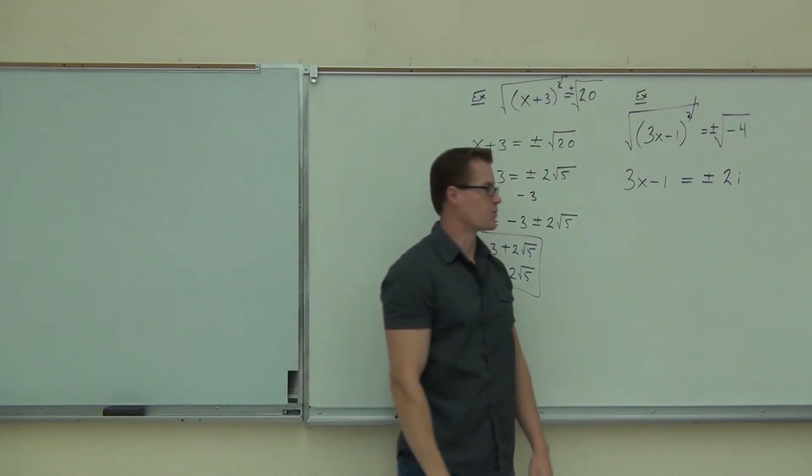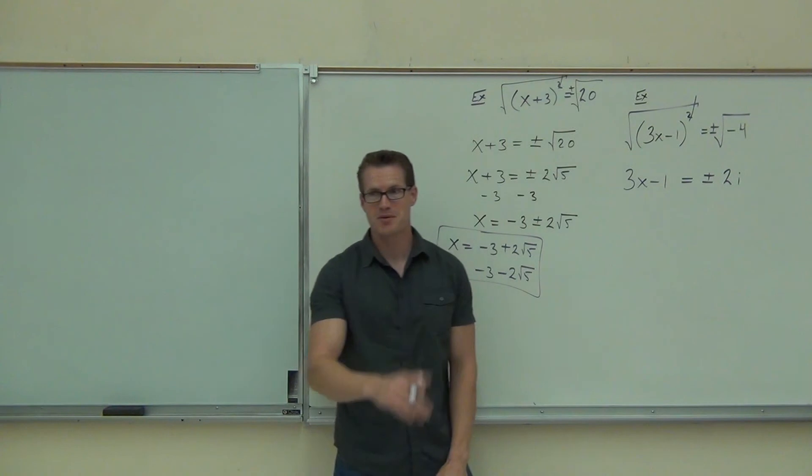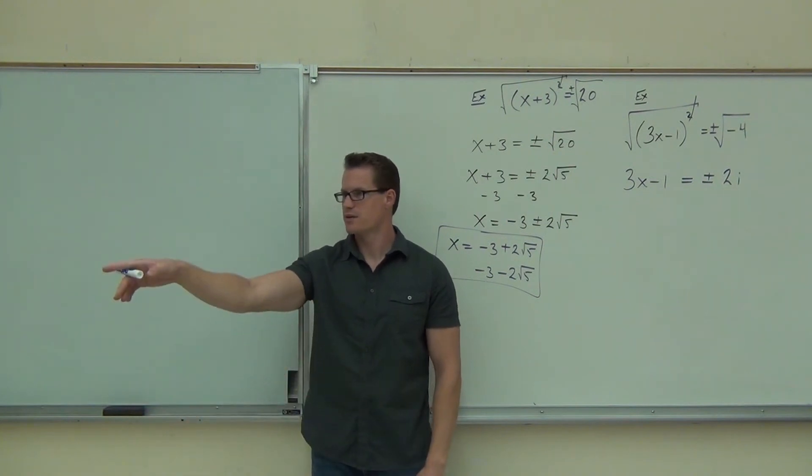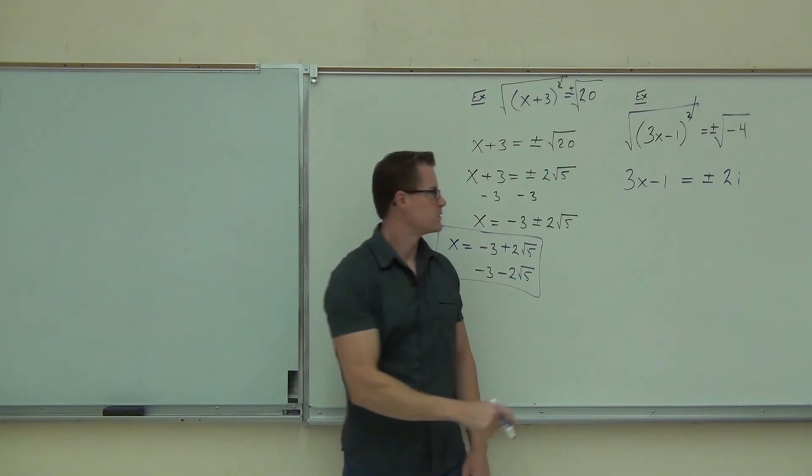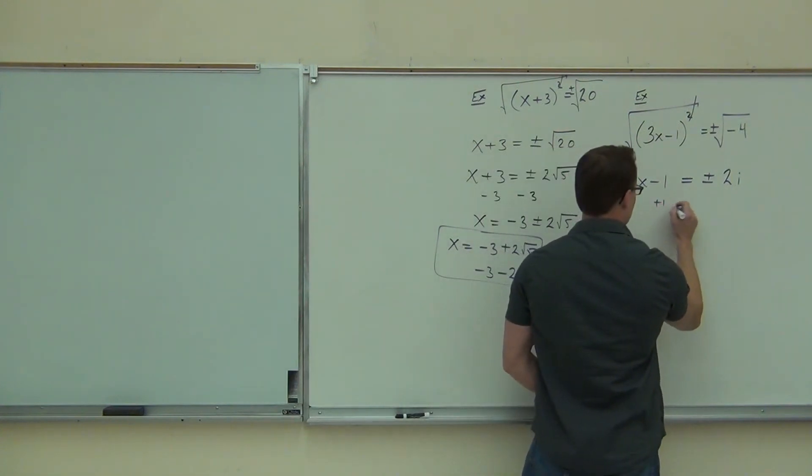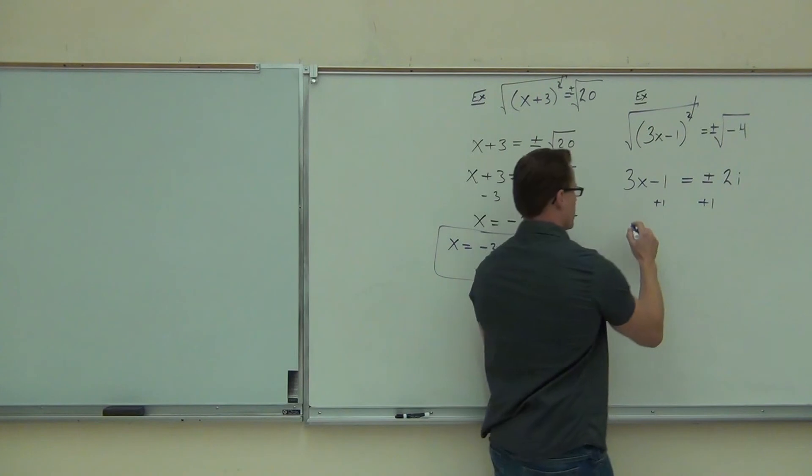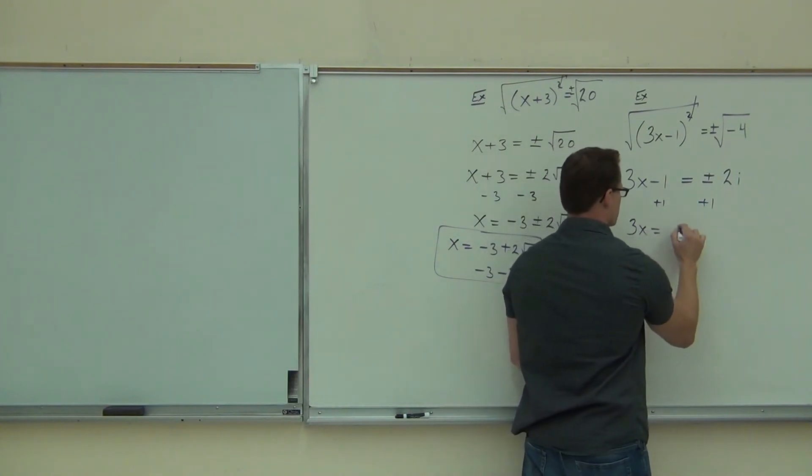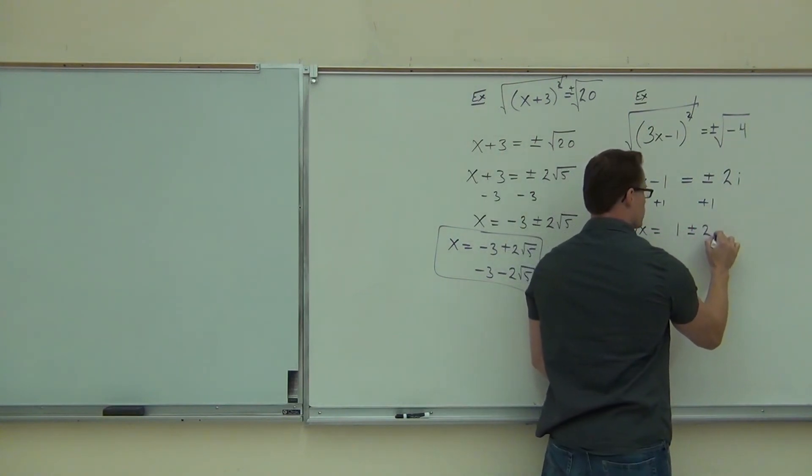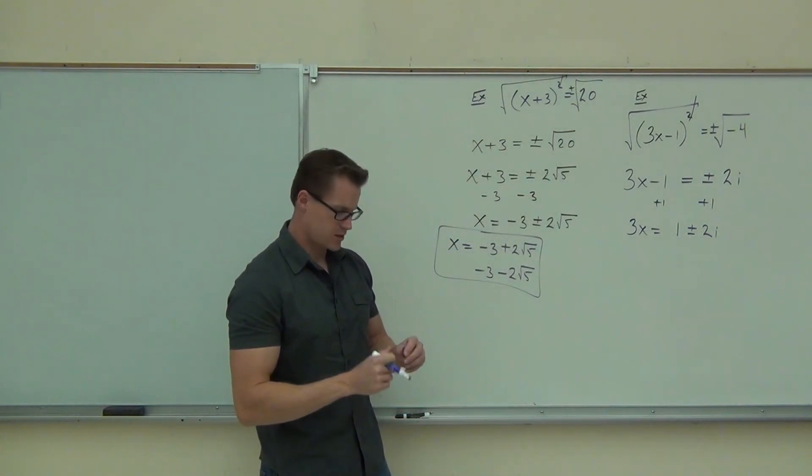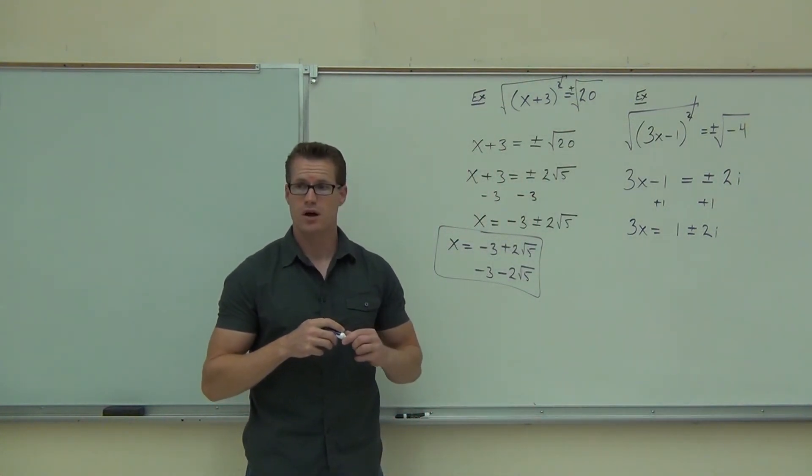Hopefully, because you just, hopefully you did it on your homework. Otherwise, your homework probably would be wrong. Are you done? No. Not quite. You've got to solve for x. Tell me over here on this side, what's the first thing you're going to do to solve for x? Add one. Does this one get added to that, too? No. So I have 3x equals 1 plus or minus, don't forget about the plus or minus, 2i. 1 plus or minus 2i. So far, so good? Are you done now?